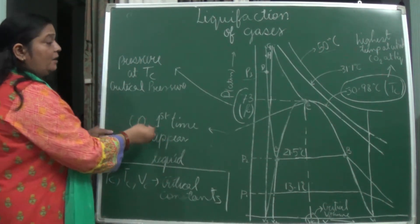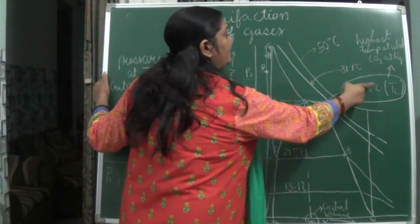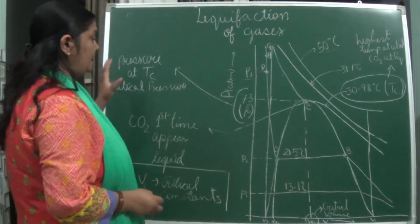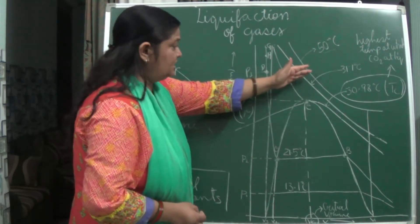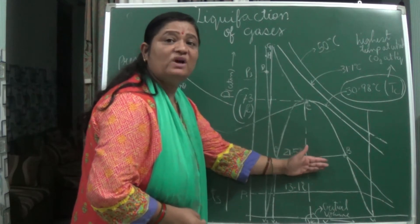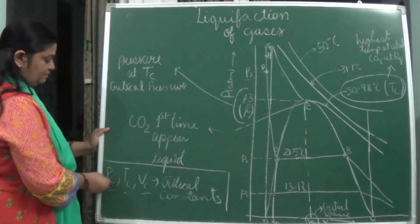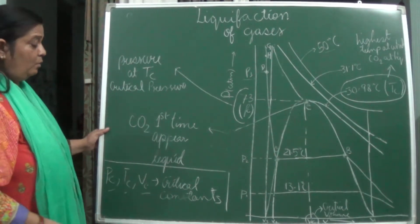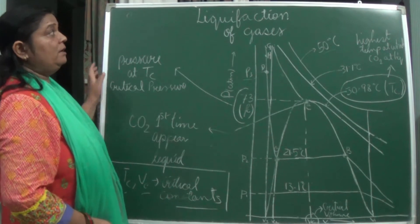The critical temperature of carbon dioxide is 30.98 degrees Celsius, critical pressure is 73 atmospheric pressure, and the volume is Vc — this is where it first appeared in liquid form. Above that it exists in gaseous form. Below that temperature it exists in both liquid and gaseous form, so the volume is increasing. Pc, Tc, and Vc — critical pressure, critical temperature, and critical volume — are all constants.